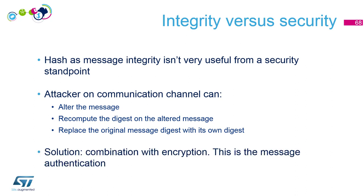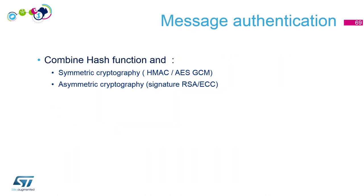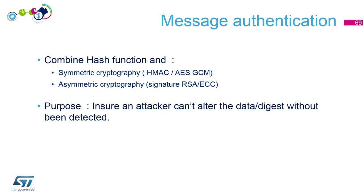A solution is to combine hashing with encryption — this is message authentication. Message authentication is a combination of a hash function with either symmetric or asymmetric cryptography. For symmetric cryptography we'll see HMAC and AES-GCM; for asymmetric, signature with RSA and ECC. The purpose is to ensure that an attacker cannot alter the data and the digest without being detected.